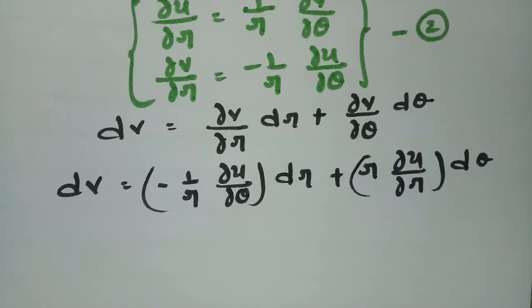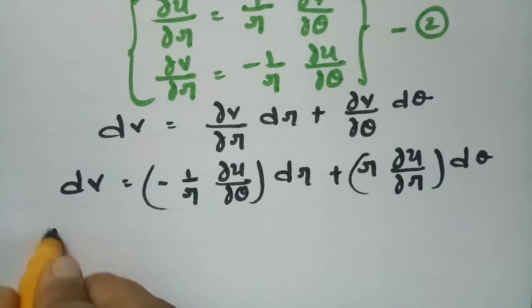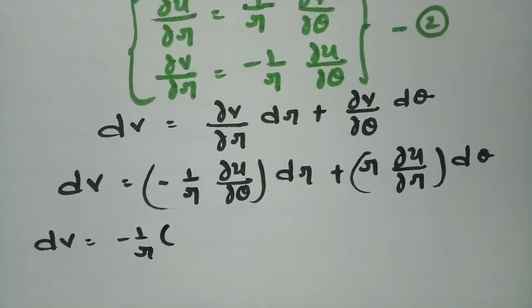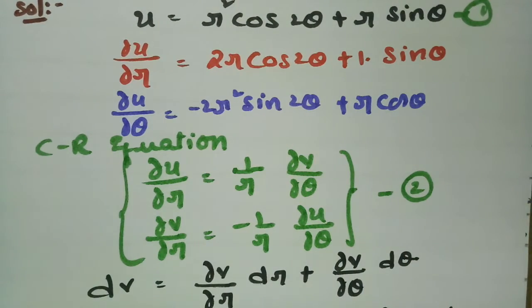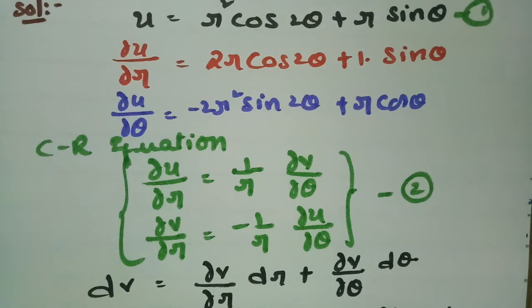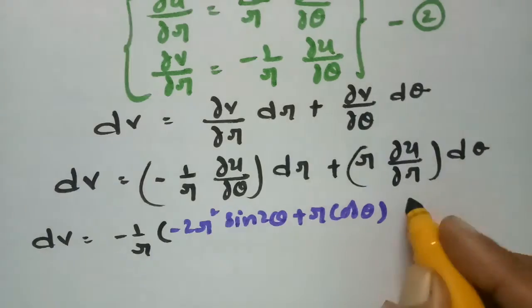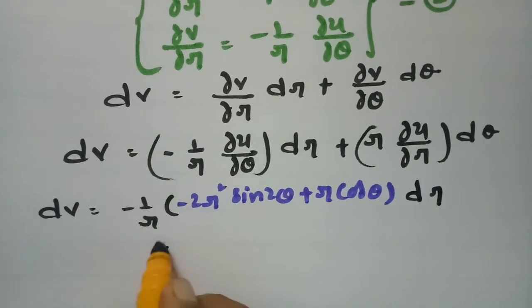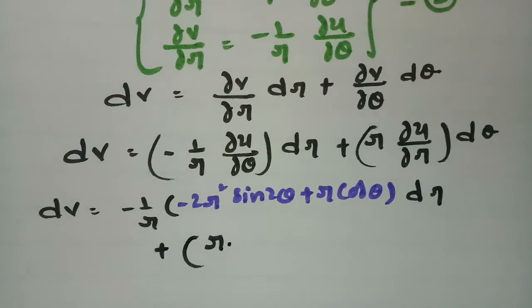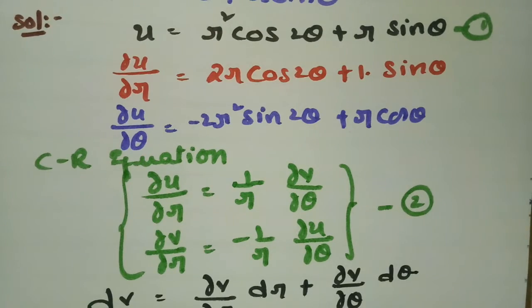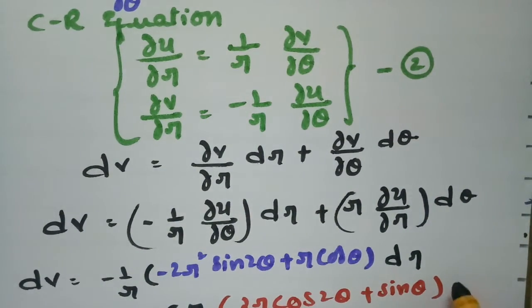Now substituting: dv = (-1/r) times ∂u/∂θ, which is (-2r² sin2θ + r cosθ), times dr, plus r times ∂u/∂r, which is (2r cos2θ + sinθ), times dθ.